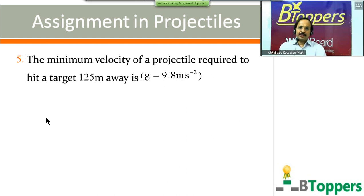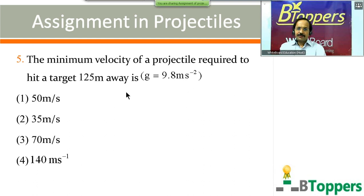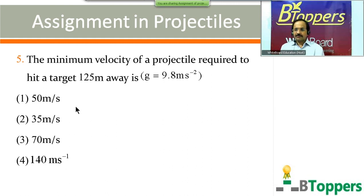Question number 5: the minimum velocity of a projectile required to hit a target 125 meters away is — four options are shown on screen. You have to take g = 9.8 m/s² for this question. Come on, start trying the question. In case you need more time you can take a pause.